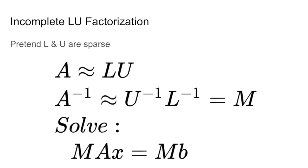Hence, we have A is approximately equal to L times U, where we have taken the original dense LU matrices and forced sparsity. The inverse of A is approximately equal to U inverse, L inverse, and we can then use this as our preconditioner matrix M, which will then be approximately the inverse of A.